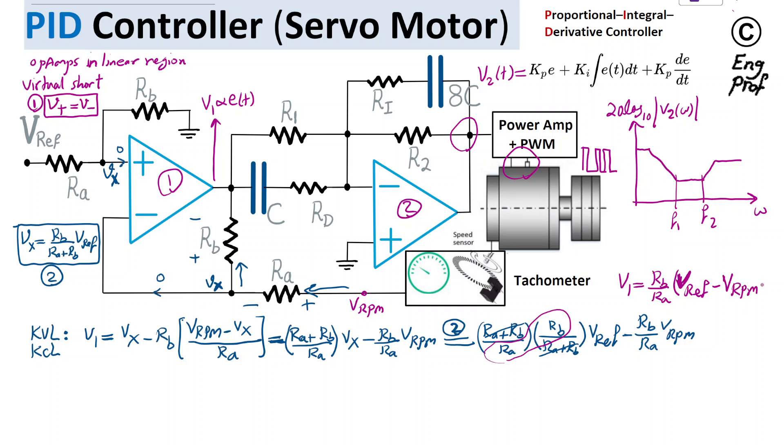Exactly as we expected, because this is nothing but the error term E of t. The voltage at the output of op-amp 1 is a magnified version of the error term. That's exactly what we wanted. And this goes at the input of the PID. Now let's focus on the PID.